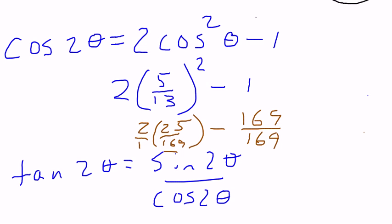So now I have 2 times 25, which is 50 minus 169. So 50 minus 169 is negative 119 over 169. So there's your cosine value.